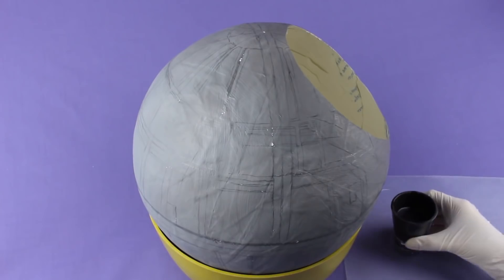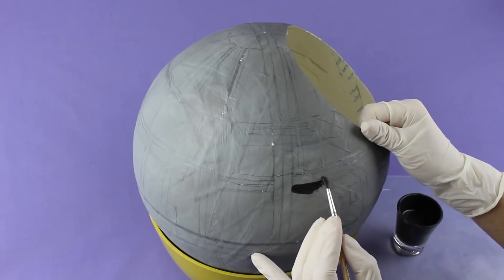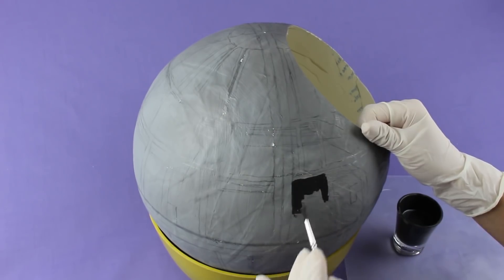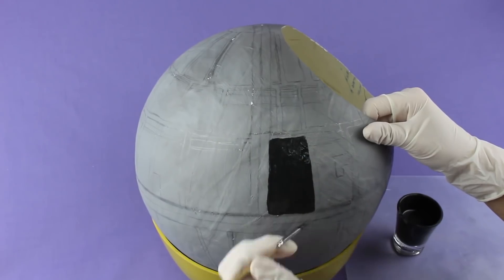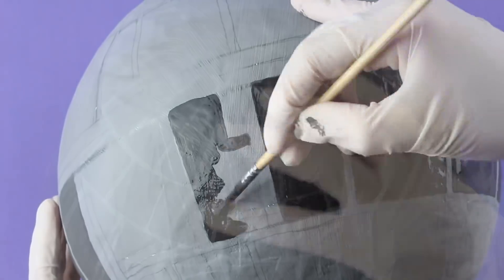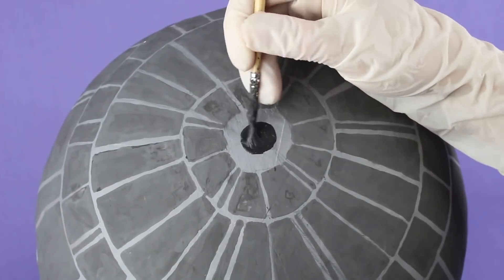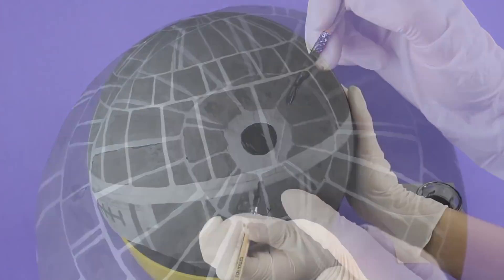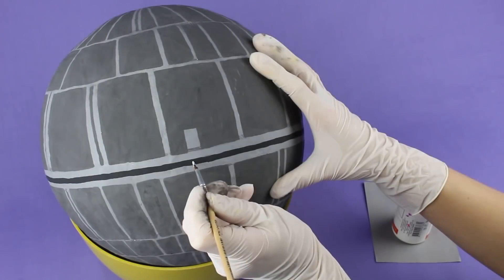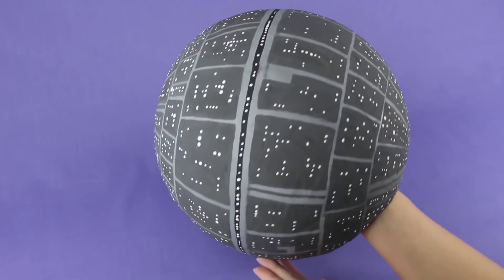Now take a darker gray paint and a thin brush. Paint all the windows. We've chosen an acrylic paint that becomes lighter after drying, so we'll get the right shade. The paint is dry. Add a finishing touch. Define the equator with black paint. Make dots along the equator using white paint and in every window. This is what we've made.